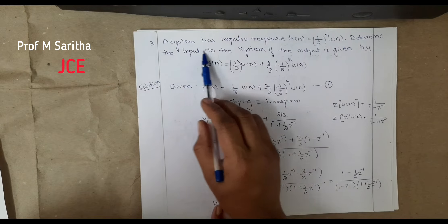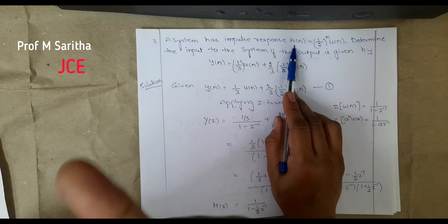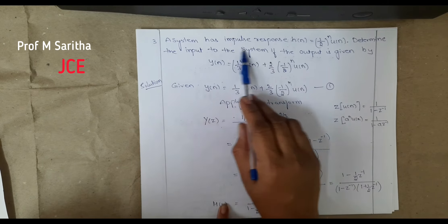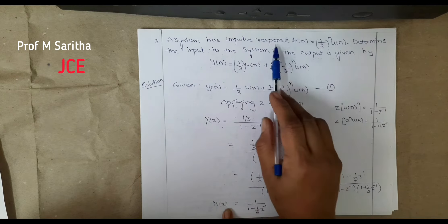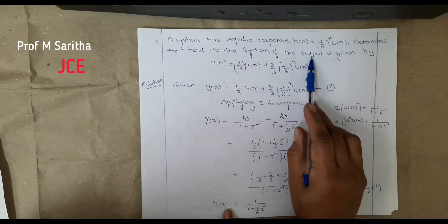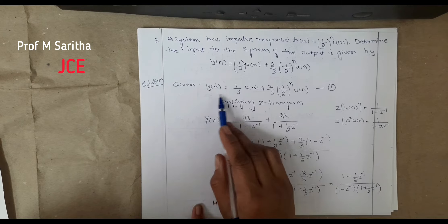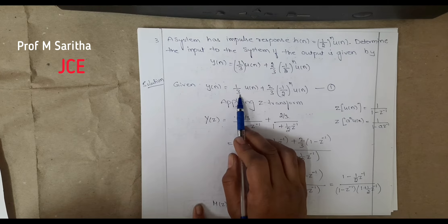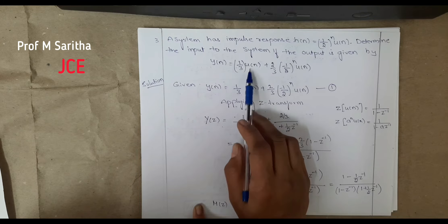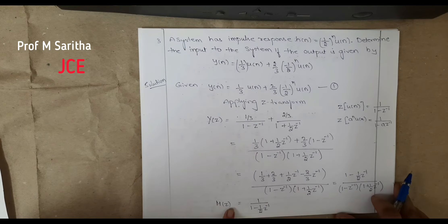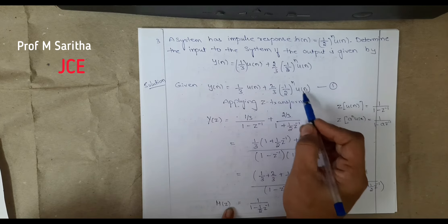Problem 3: A system has impulse response h(n) given, and the output y(n) is also given. Unlike the previous problems where input and output were given, here impulse response and output are given and you must find the input. Given: y(n) = (1/3)u(n) + (2/3)(−1/2)^n u(n). Note: this is (1/3) times u(n) — not (1/3)^n — so do not confuse the two. Take this as equation 1.